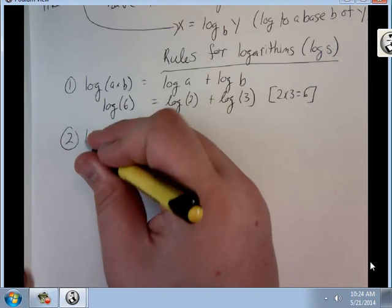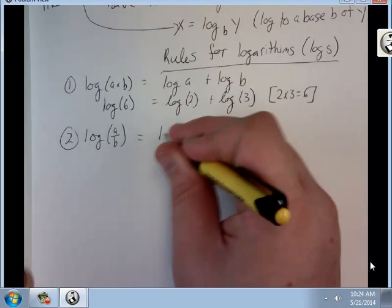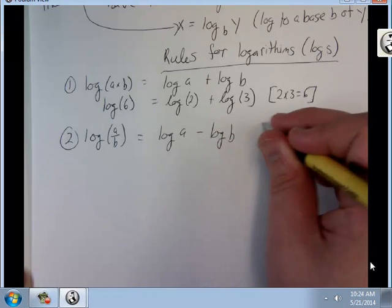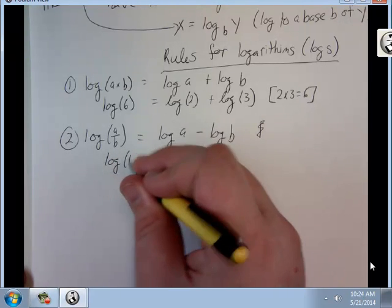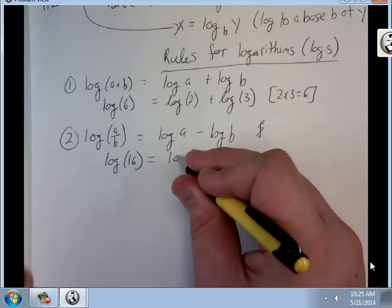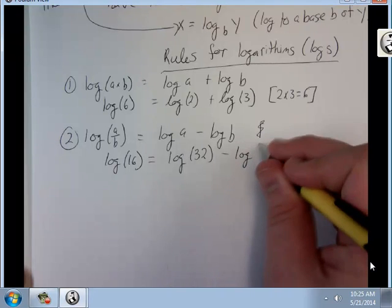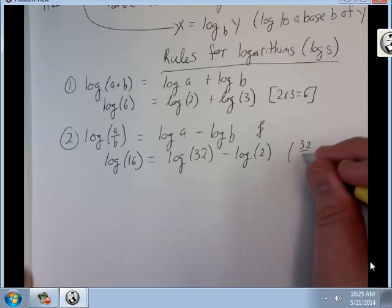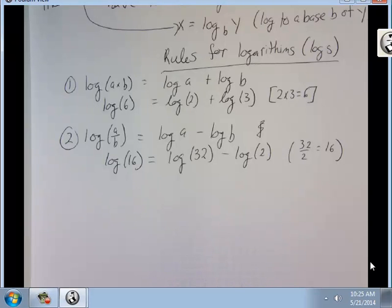The log of a over b equals log of a minus log of b. The log of 16 is the log of 32 minus the log of 2, because 32 over 2 equals 16. I can just rewrite it. That's all that these are doing. They're just rewriting things to make them a little bit simpler.